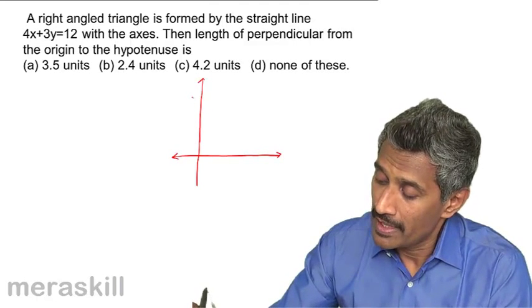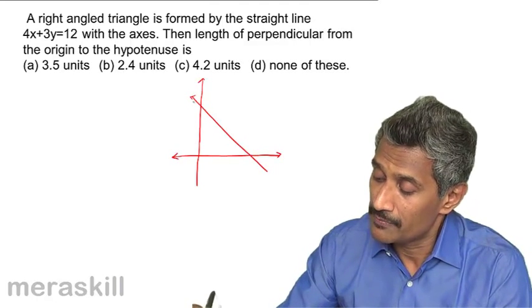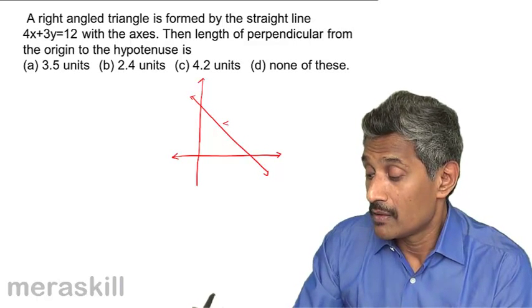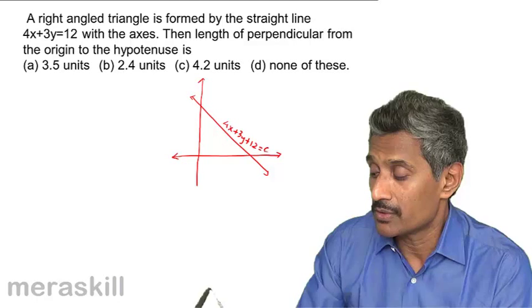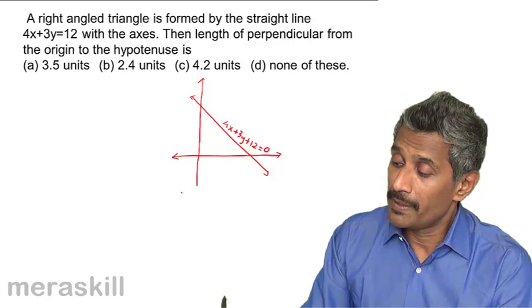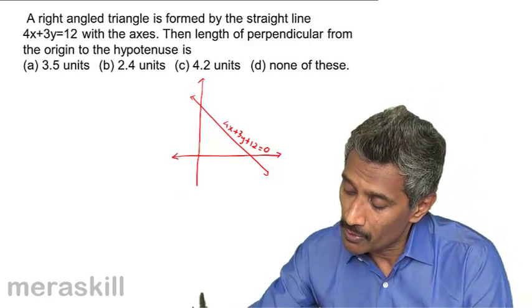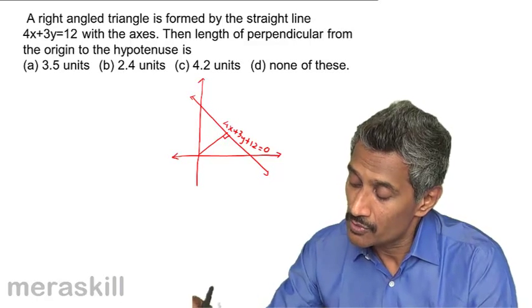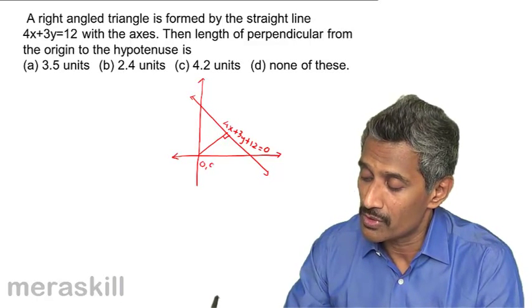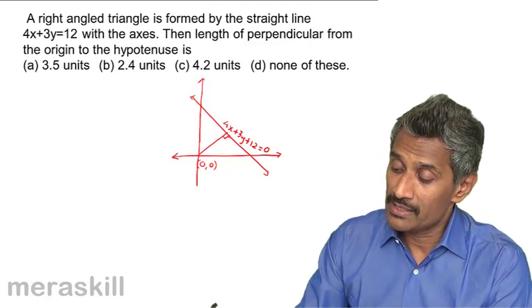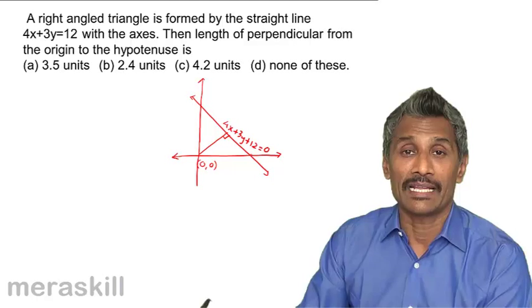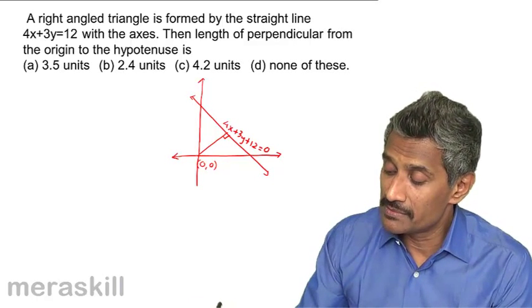The length of perpendicular from the origin to the hypotenuse—the coordinates of this point are (0, 0)—so basically it's the distance between a point and a line.